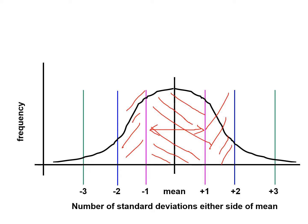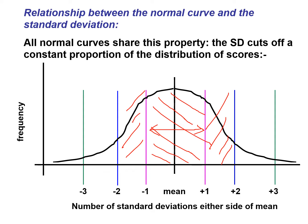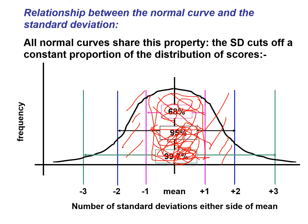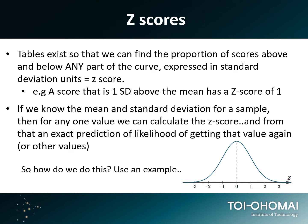This holds true for all normally distributed data sets — all normal curves share this property: 68, 95, and 99.7 percent. So 68 percent of all individuals fall within one standard deviation of the mean, and that's proportionate to 68 percent of the area underneath the curve. If you took all the area underneath the curve and measured that portion, it would be 68 percent of the total area.